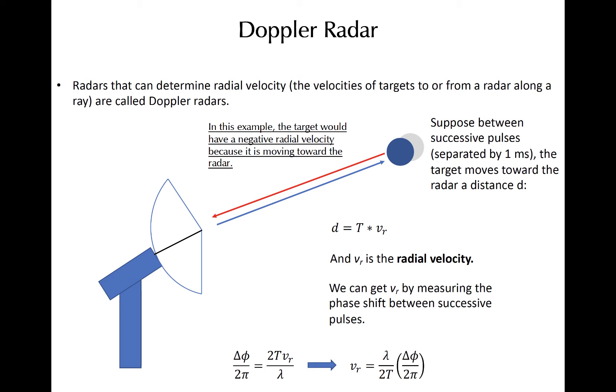Of course, we cannot explicitly measure this distance with radar. However, we can detect a phase shift between successive pulses and use this to derive the frequency shift and radial velocity given the wavelength of transmitted radiation.